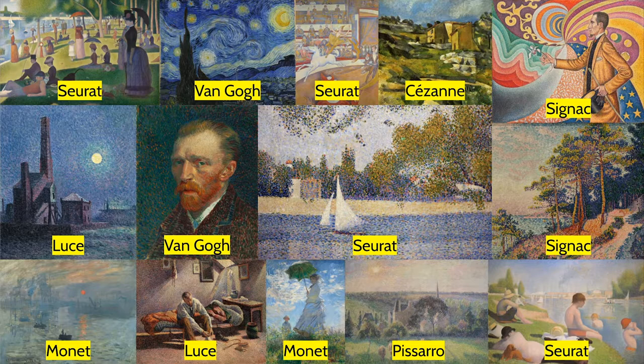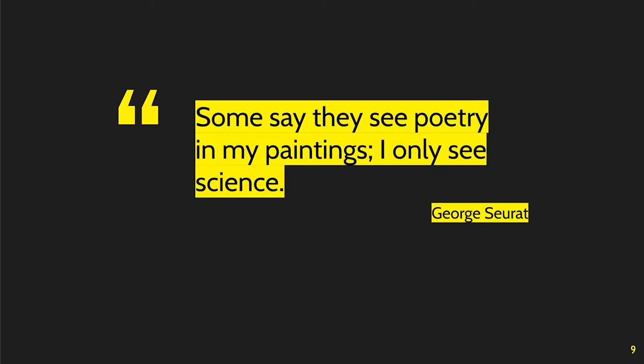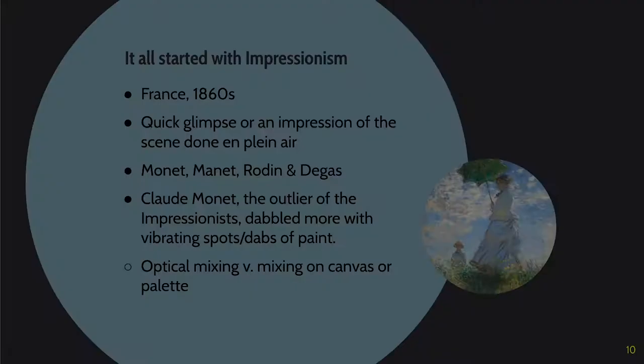Pissarro is actually a woman. There were very few women in most of art back at the time. And Georges Seurat said: 'Some say they see poetry in my paintings. I only see science.' He really wanted a very structured way to approach his painting.